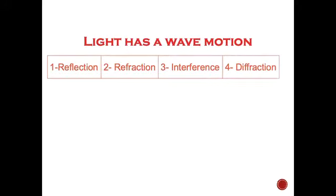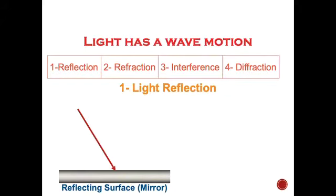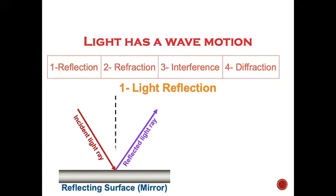Let's start with light reflection. If you have a reflecting surface — for example, a mirror — and a light ray falls on this reflecting surface, it will rebound or reflect. This is the incident light ray and this is the reflected light ray. This is an imaginary line drawn perpendicular to the plane of the reflecting surface.